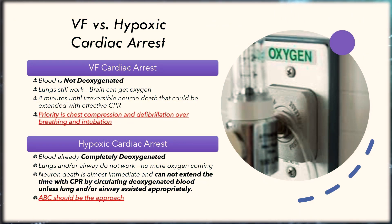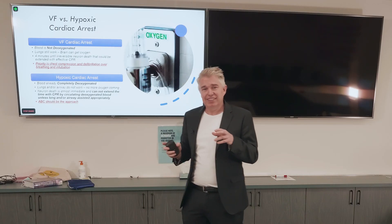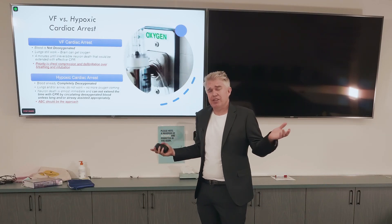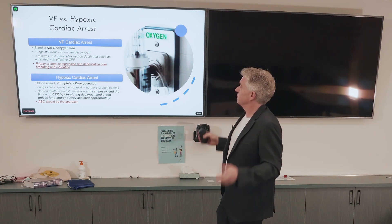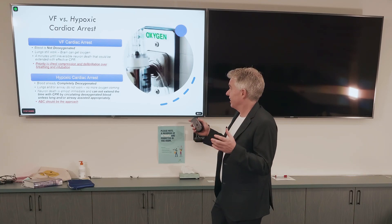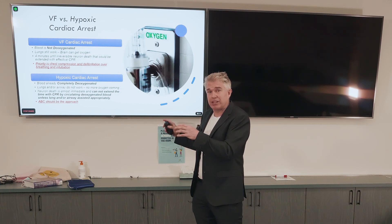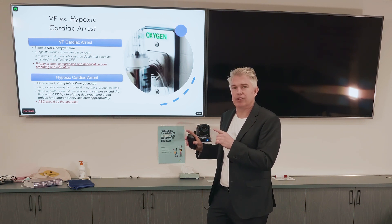Let me draw parallels between VF versus hypoxic arrest. In VF, the blood is not deoxygenated — your heart suddenly stopped but your saturation was a hundred when that happened. In the classical scenario, the lungs still work. The brain starts dying in four minutes, but we can extend that time with effective CPR and a couple of breaths per minute. The priority is chest compressions and defibrillation, as it should be. It's an extraordinarily good algorithm, but only if you've got VF.